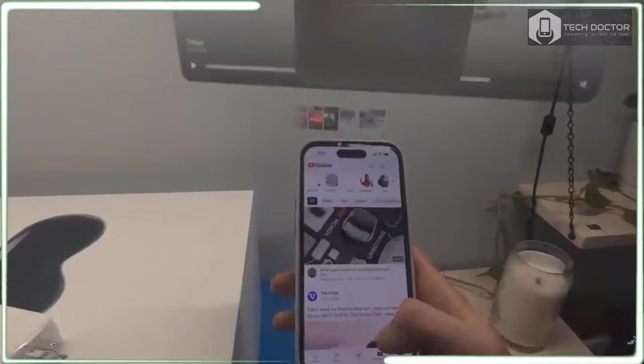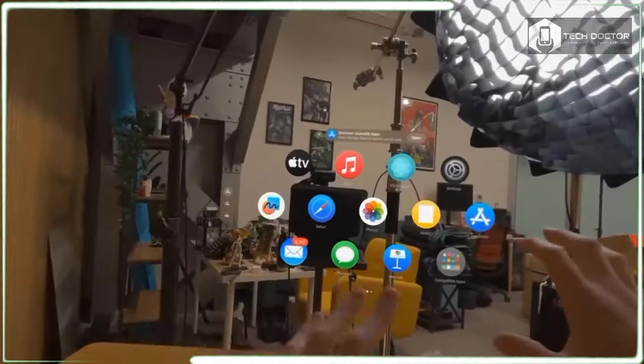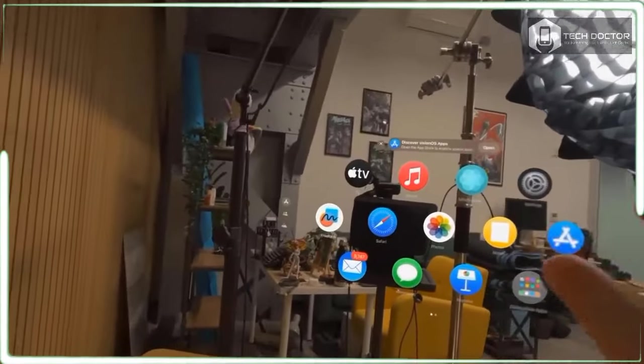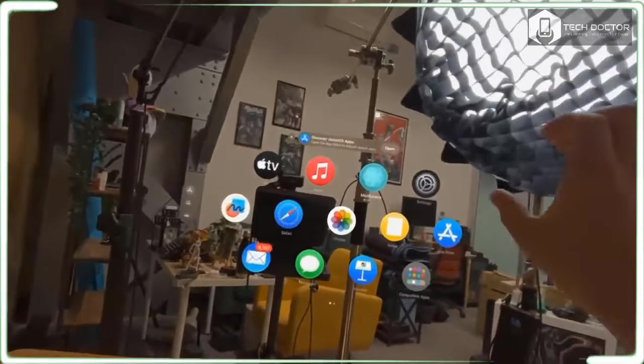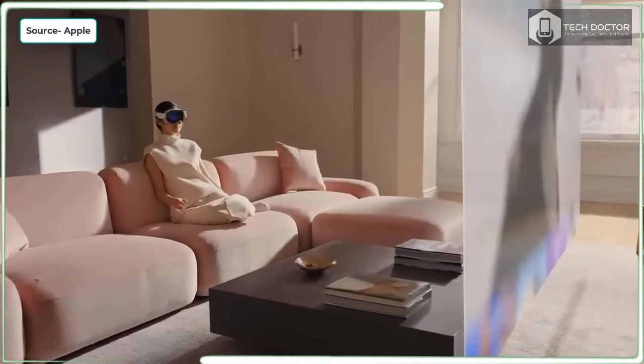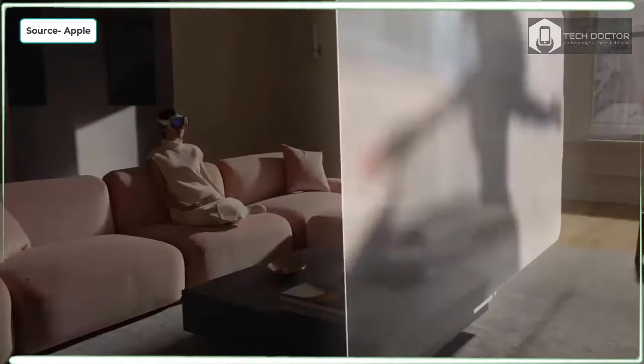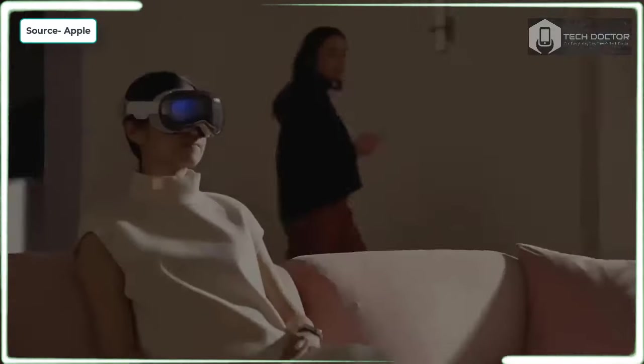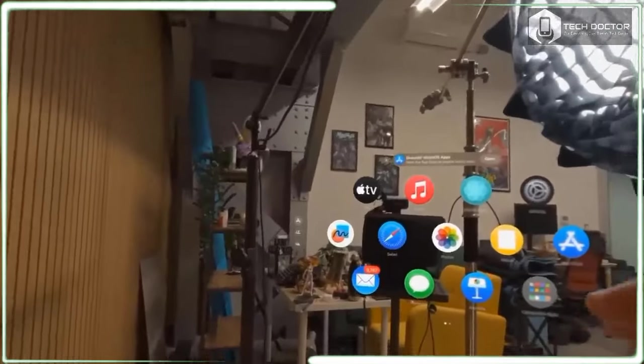So what can you do with the Vision Pro? For starters, it's a multitasking jam thanks to the built-in M2 chip that runs the OS. For example, I launched Safari in the center of my space, then I turned to my left and used Siri to launch Slack and the app appeared. When I turned to the right of Safari and opened Apple Music, so I could have that playing in the background.